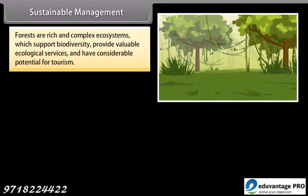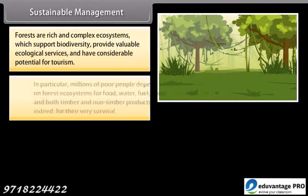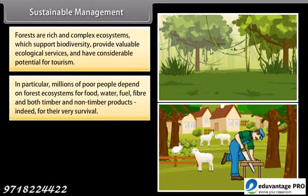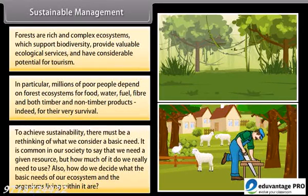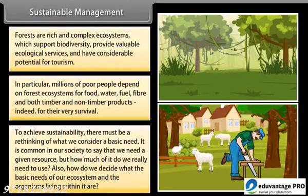Sustainable Management. Forests are rich and complex ecosystems which support biodiversity, provide valuable ecological services, and have considerable potential for tourism. Millions of poor people depend on forest ecosystems for food, water, fuel, fiber, and both timber and non-timber products — indeed for their very survival. To achieve sustainability, there must be a rethinking of what we consider a basic need. It is common in our society to say that we need a given resource, but how much of it do we really need to use? How do we decide what the basic needs of our ecosystem and the organisms living within it are?